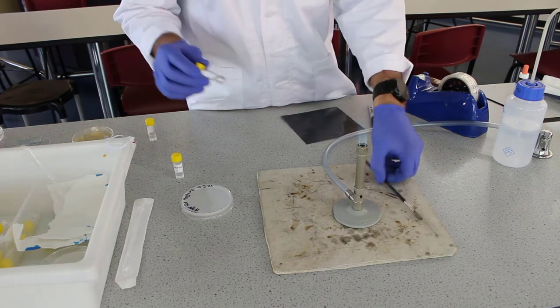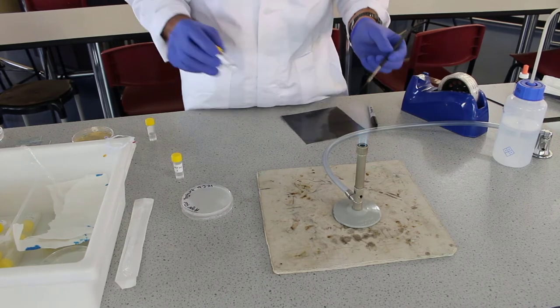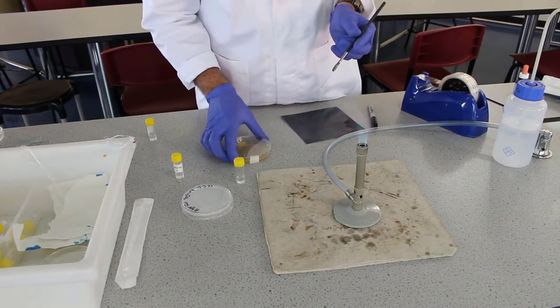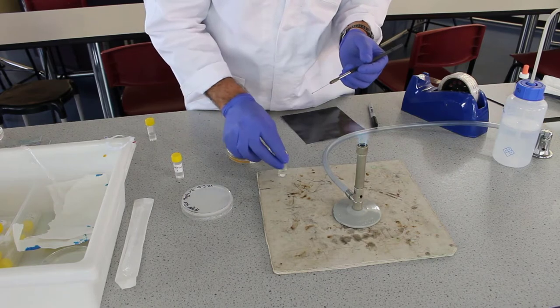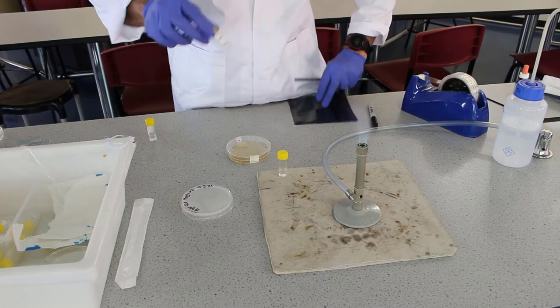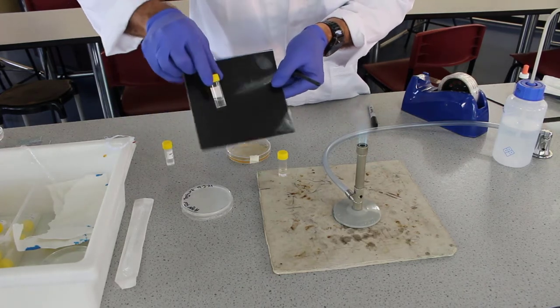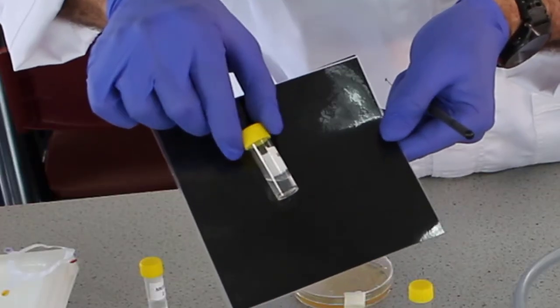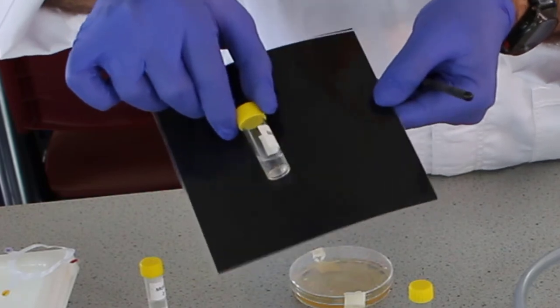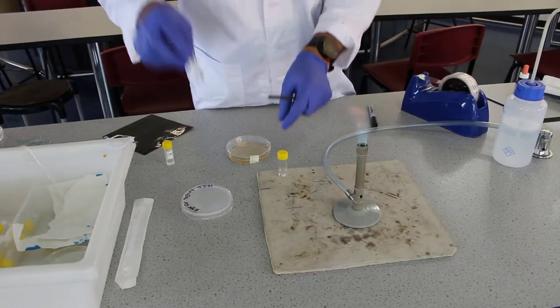Now what we're going to do is inoculate this tube with some of our single colonies. We want to make a suspension that's about as cloudy as this, which is very hard to see, but this is what we call a McFarlane standard, which is a standard of turbidity. This is a McFarlane one. This is what we're trying to match it to. It's a measure of how turbid or how cloudy the liquid is.